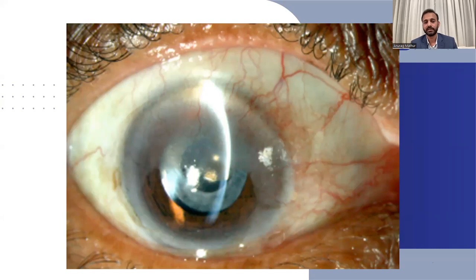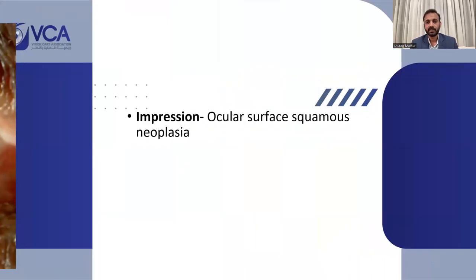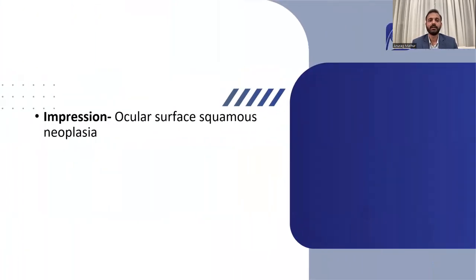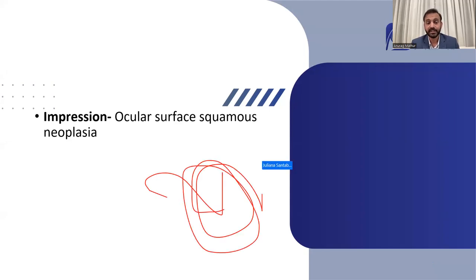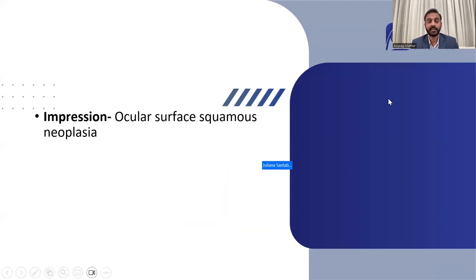This may seem similar to limbal stem cell deficiency, but it is not. The thick feeder vessels supplying the flattened lesion involving the upper half of the cornea led to a diagnosis of ocular surface squamous neoplasia — a surface cancer that must be excised in toto, otherwise it tends to recur. It can be treated by topical mitomycin or interferon eye drops, or in extreme cases when the sclera is involved, it must be excised and a graft placed.